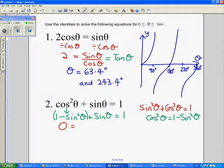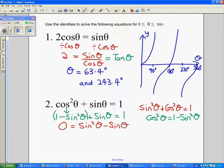I'm going to add sin² θ to both sides, leaving me with sin² θ. I need to subtract sin θ from both sides, leaving us with sin² θ minus sin θ equals 0.